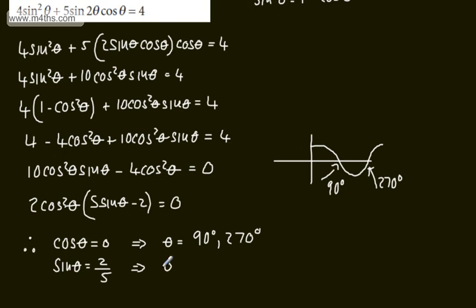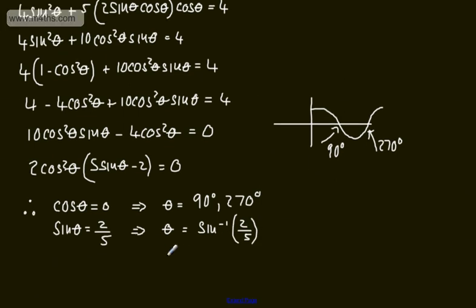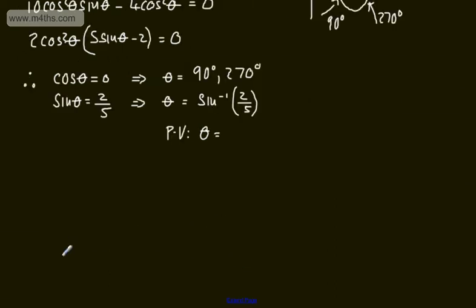At this stage, we can say that theta is equal to the inverse sine of 2 fifths or if you like 0.4. This will give us a principal value for theta. So we can say principal value, theta will be equal now to the inverse sine of 2 fifths.